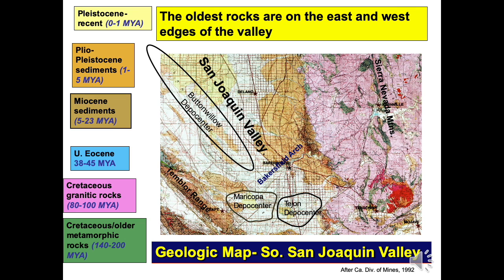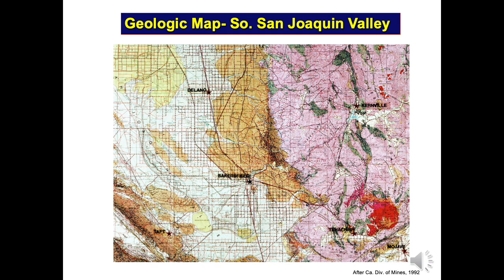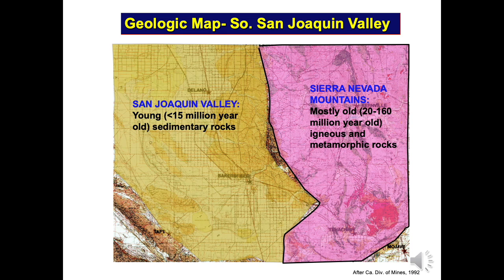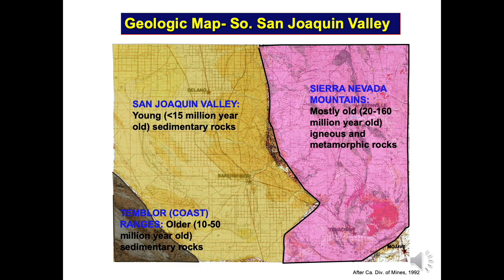I've also labeled areas of long-term subsidence such as the Buttonwillow, Tejon, and Maricopa Depot centers. Let's simplify this map with color overlays that emphasize the landform provinces seen earlier. All of the Sierra Nevada Mountain Province is shown as pink, all of the San Joaquin or Great Valley Province is yellowish tan, and the eastern edge of the Temblor or coast range province is brown. This video exclusively deals with the yellowish tan San Joaquin Valley.